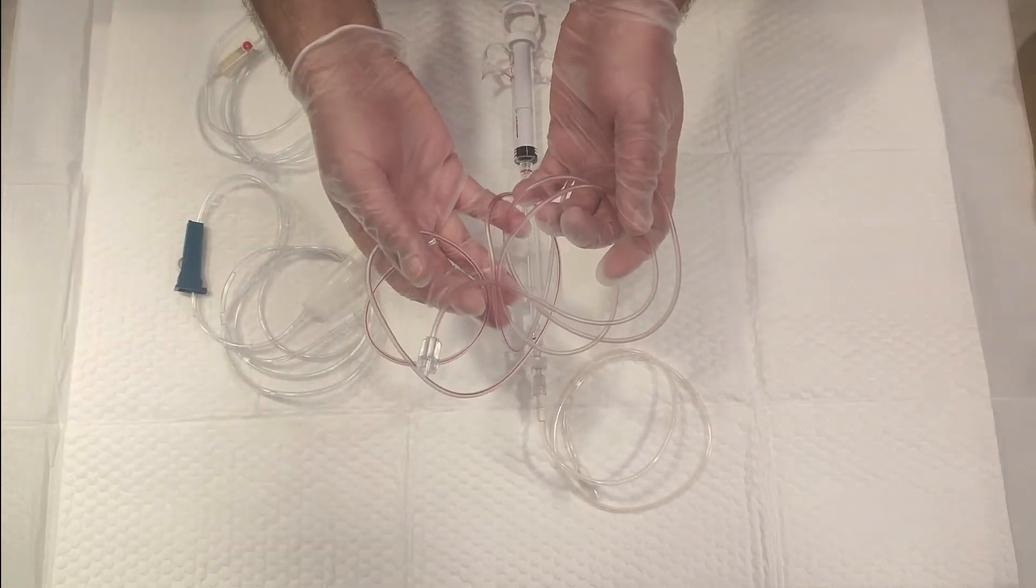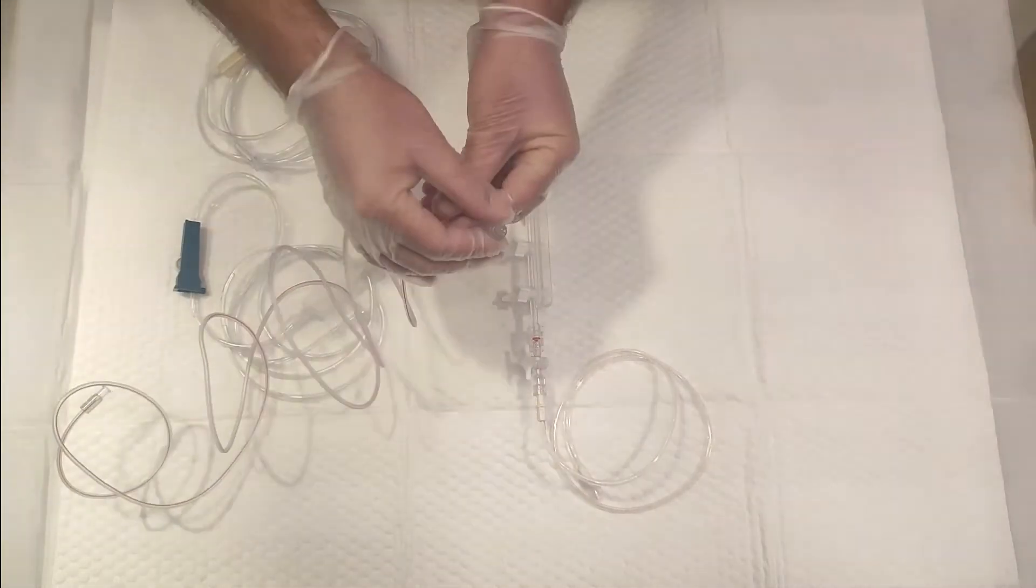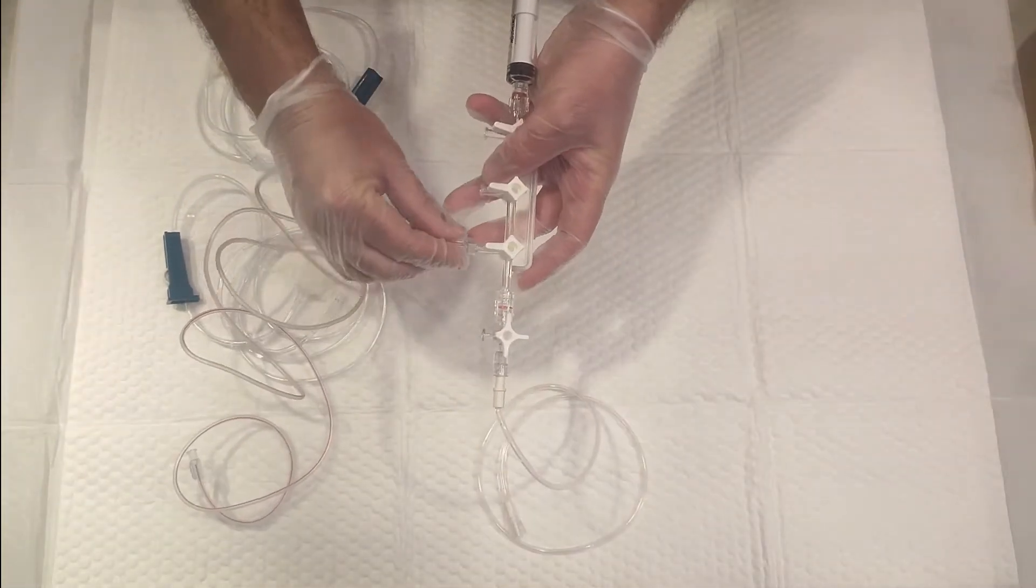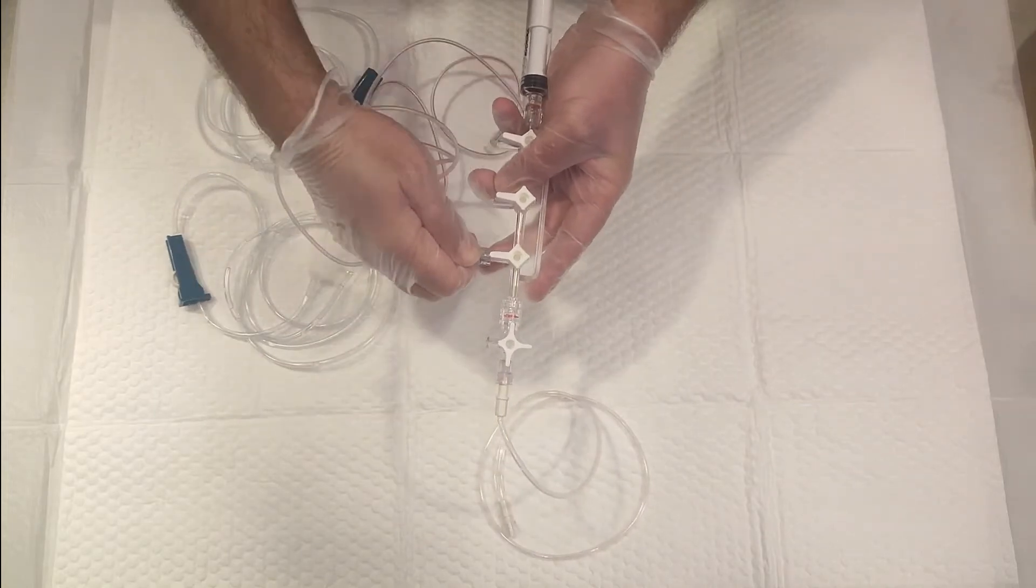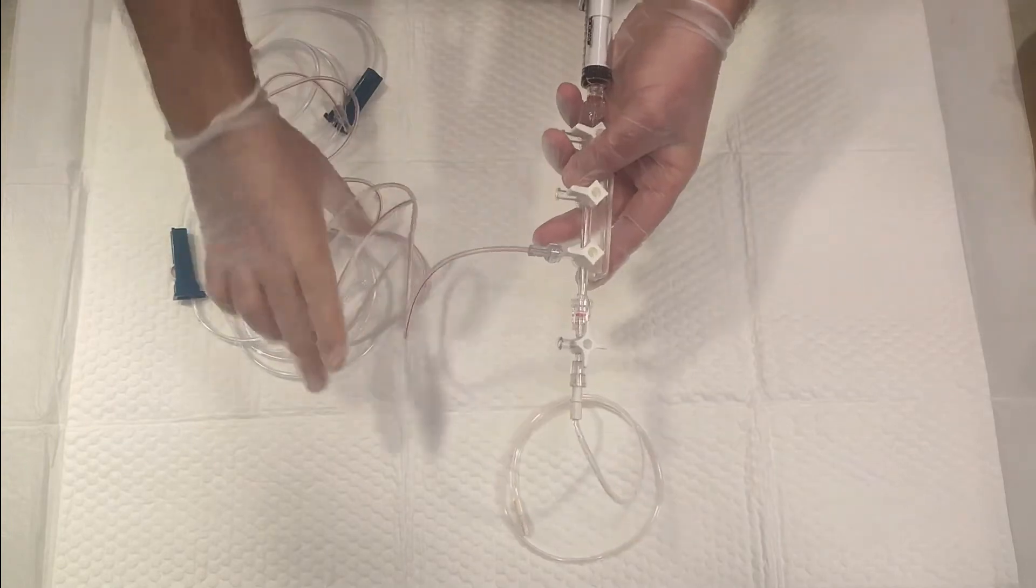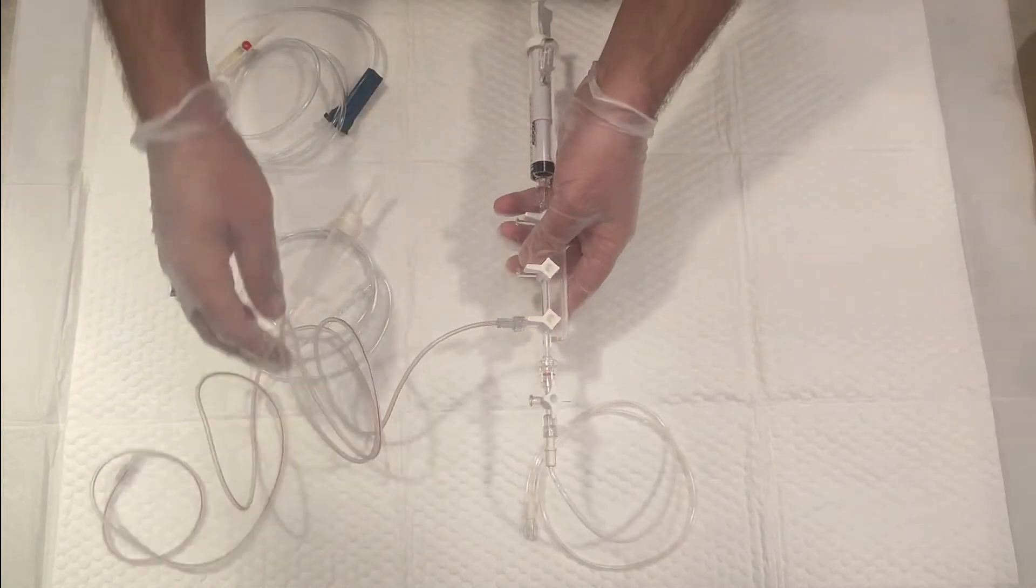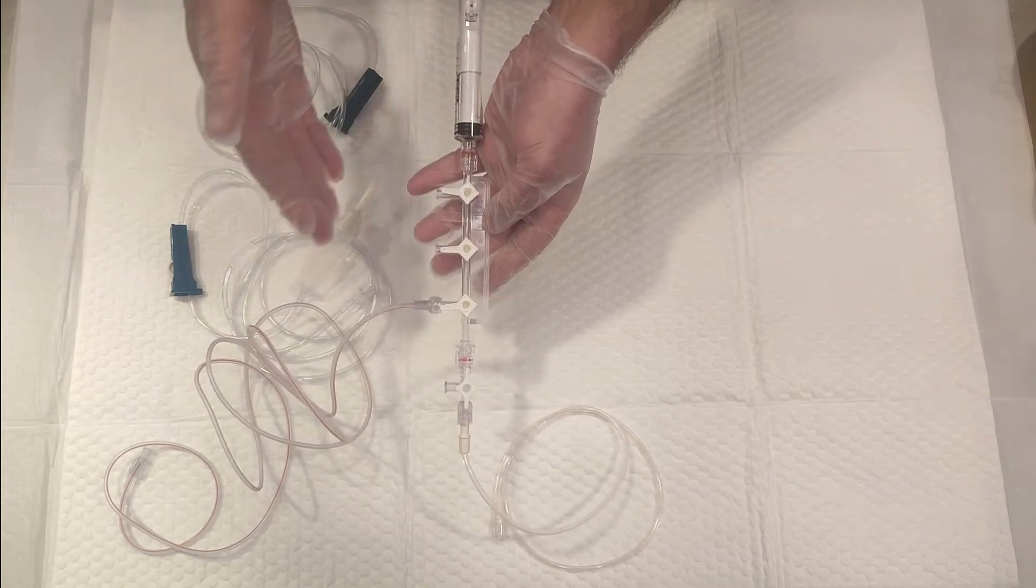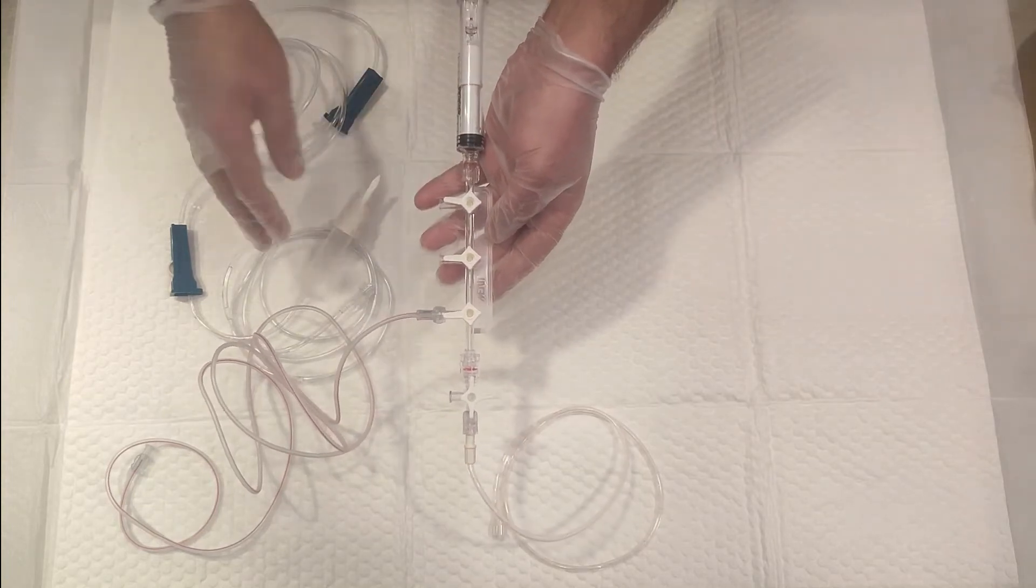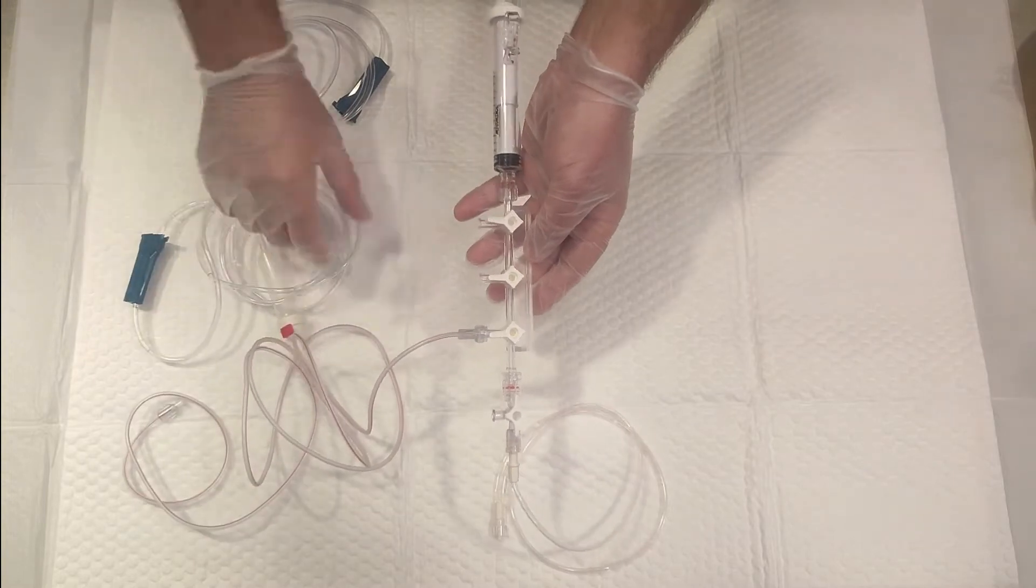The pressure monitoring line can be connected here. As you can see, rotate it clockwise, lock and tighten it. Keep it aside for a while. In some cath packs, it comes already attached, but in some packs, it comes separately. It's easy to connect.